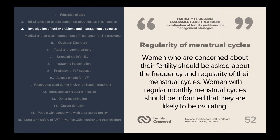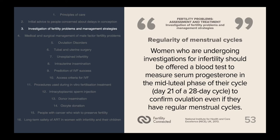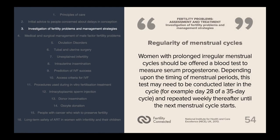The regularity of menstrual cycles is an important predictor of fertility problems. Women should be asked about the frequency and regularity of their menstrual cycles. Women with regular monthly cycles are likely to be ovulating. Women undergoing investigations for infertility should be offered a blood test to measure serum progesterone in the mid-luteal phase, around day 21 of a 28-day cycle, to confirm ovulation. Women with prolonged irregular cycles should have this test conducted later in the cycle, for example day 28 of a 35-day cycle, and repeated weekly until the next menstrual cycle starts.